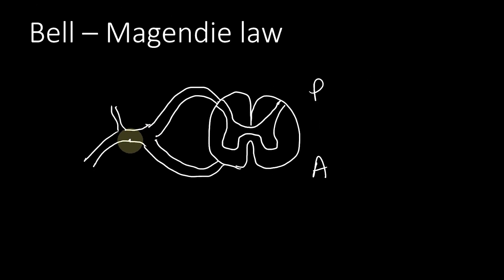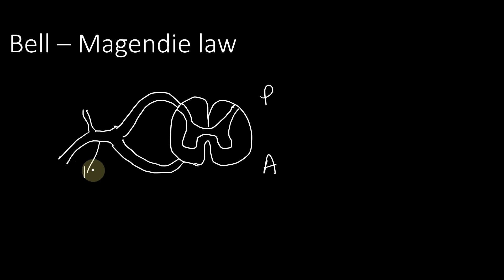So you know that the spinal nerve is mixed, it is a mixed nerve. But the Bell-Magendie law states that the ventral root is purely motor and the dorsal root is purely sensory.